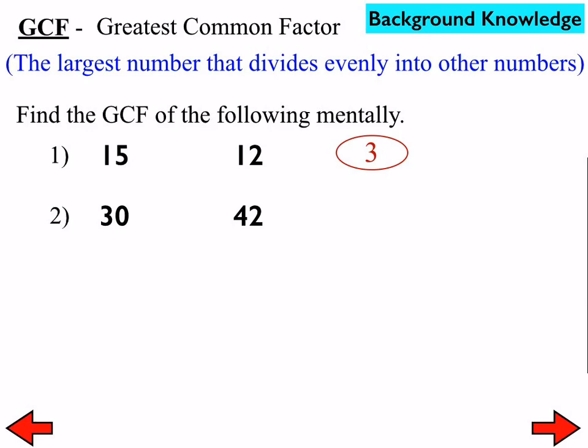How about between 30 and 42? It is 6. And all of these are in your notes. Can you go ahead and finish off 3 through 5 very quickly? All right, between 14 and 21, the GCF, or greatest common factor, is 7. Between 24 and 36, it is what?